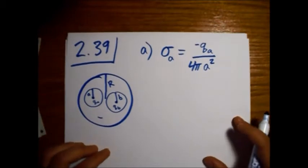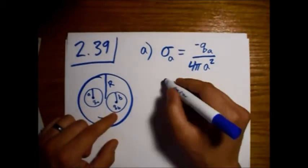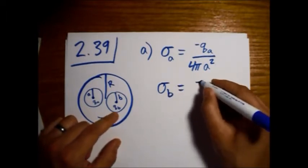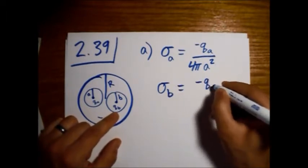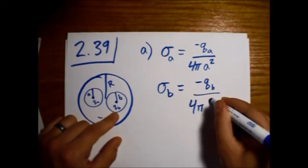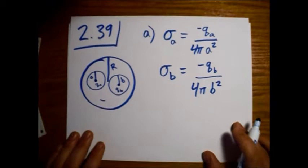And same thing goes for sigma B. There's nothing special about one or the other. We'll just change the labels A to B. So this time, Q sub B over 4 pi B squared.